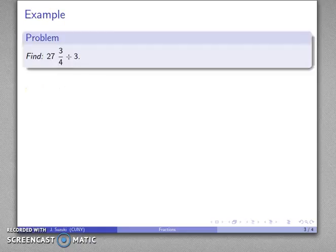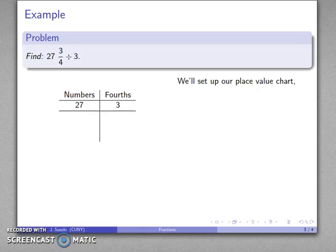For example, let's take the first problem: 27 and 3 quarters divided by 3. We'll set up our place value chart because the arithmetic of fractions is not any different from the arithmetic of whole numbers.